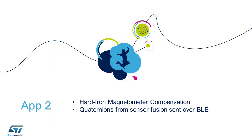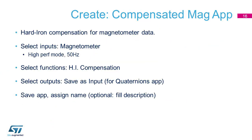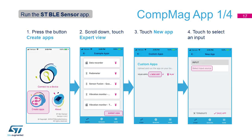Let's now see another example. In this example, we will program the box as described here. As for Example 1, enter the Expert mode and select New App to start the configuration wizard.